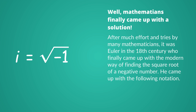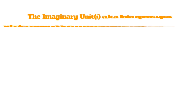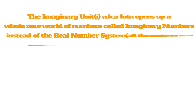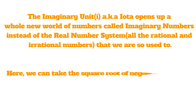i is equal to the square root of negative 1. The imaginary unit, also known as the iota, opens up a whole new world of numbers called imaginary numbers, instead of the real number system, which is all the rational and irrational numbers that we are so used to.